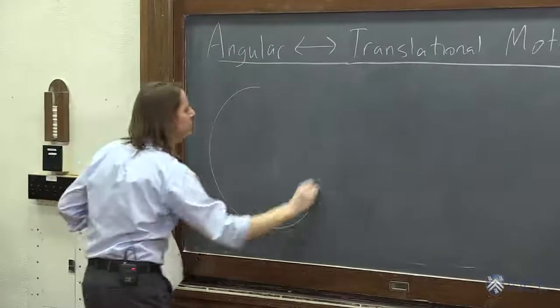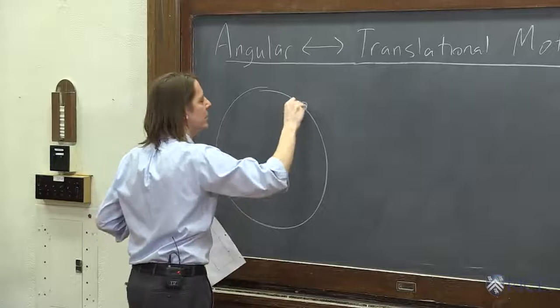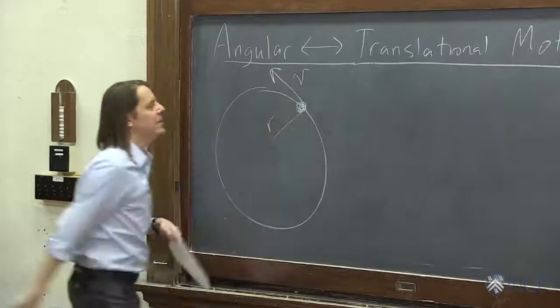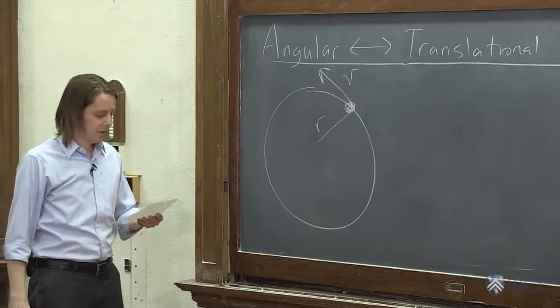So here we have, as usual, an object going in circular motion with some radius r, and it's going here at some speed v. That's what the whole unit, almost, is about.